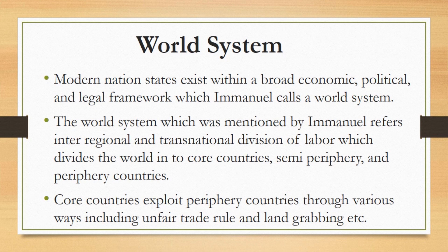Modern nation states exist within a broad economic, political, and legal framework which Emanuel calls a world system. The world system refers to an inter-regional and transnational division of labor which divides the world into core countries, semi-periphery, and periphery countries. Core countries exploit periphery countries through various ways including unfair trade rules and land grabbing. Now we will study core countries, semi-periphery countries, and periphery countries one by one.